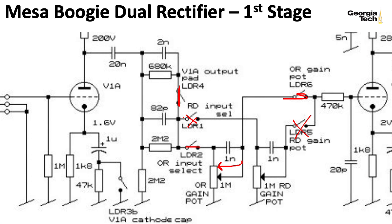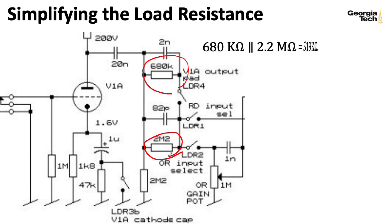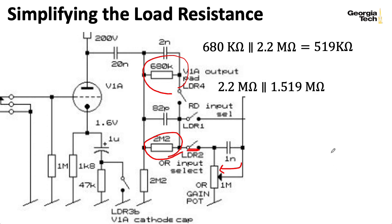Let's simplify this resistor network. We have a 680K resistor in parallel with a 2.2-megaohm resistor. Computing that parallel combination gives us 519 kilohms. We then see that in series with this 1-megaohm resistor — remembering that I assumed we have the pot turned all the way up — giving us a series resistance of 1.519 megaohms, which in parallel with this 2.2-megaohm resistor gives us 899 kilohms.